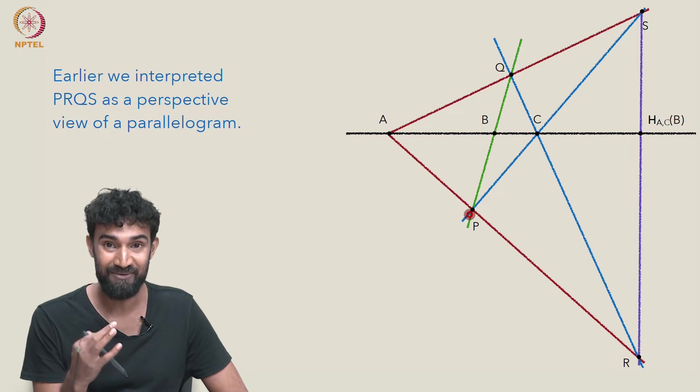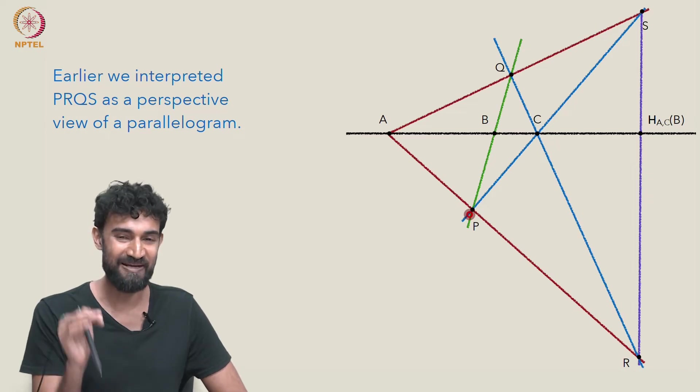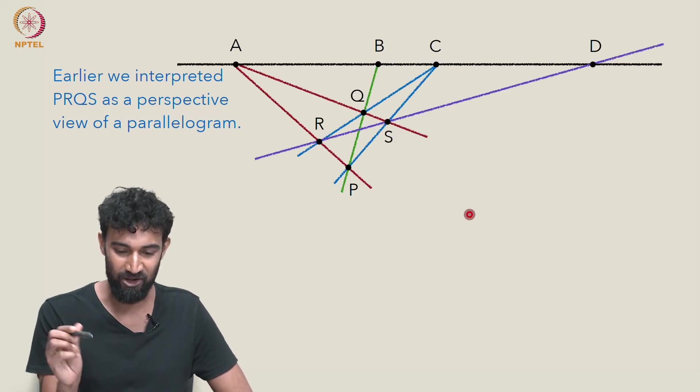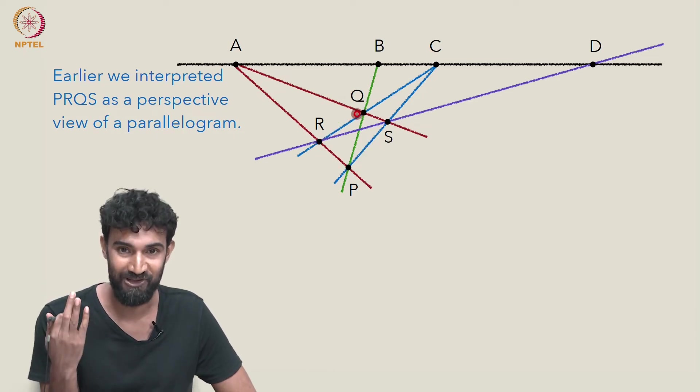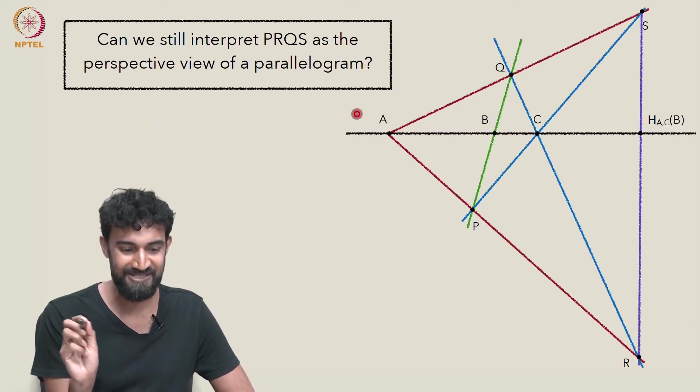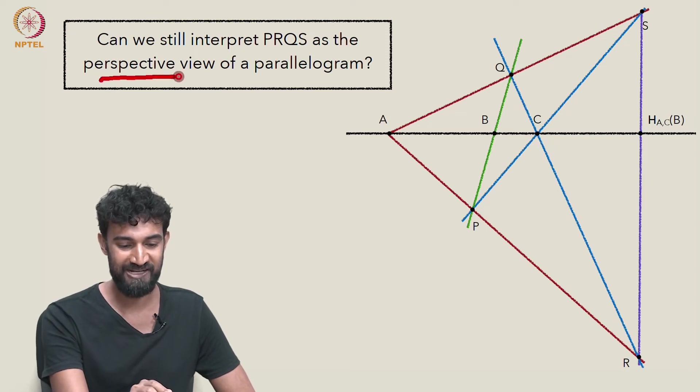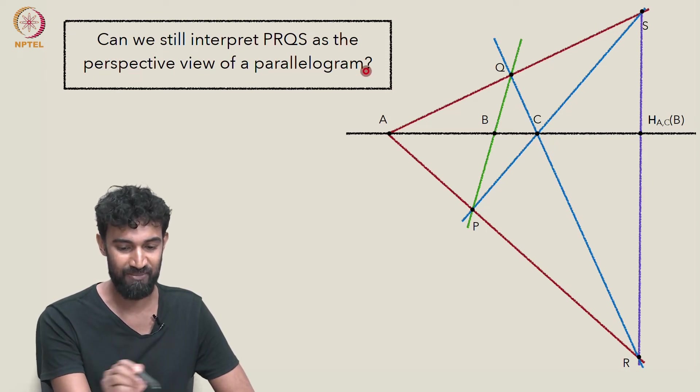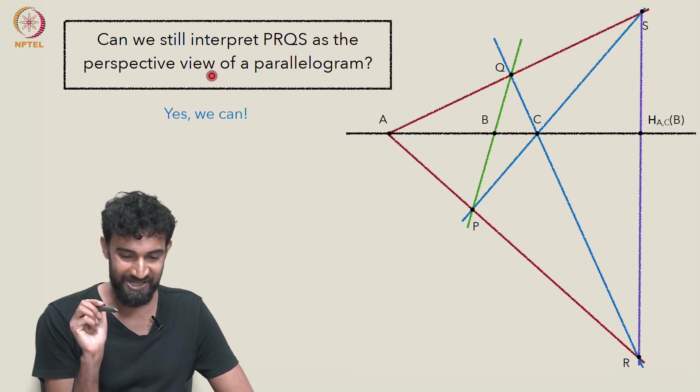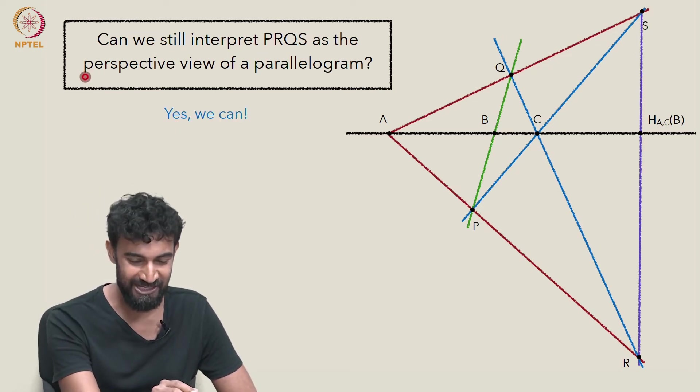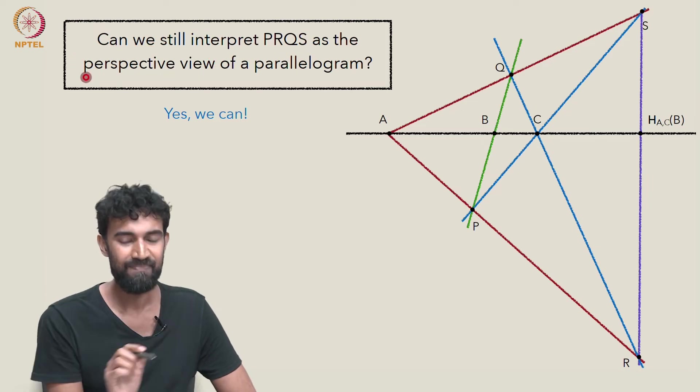But this is where we're going to bring in the machinery of the perspectivity. Because although it's not a perspective view of a parallelogram that we'll achieve in real life, it is the image of a parallelogram under a perspectivity. So we can still interpret it this way if we just enlarge our understanding a little bit.